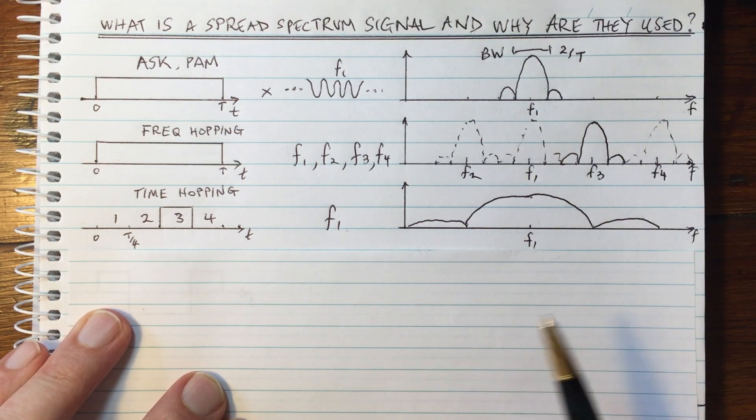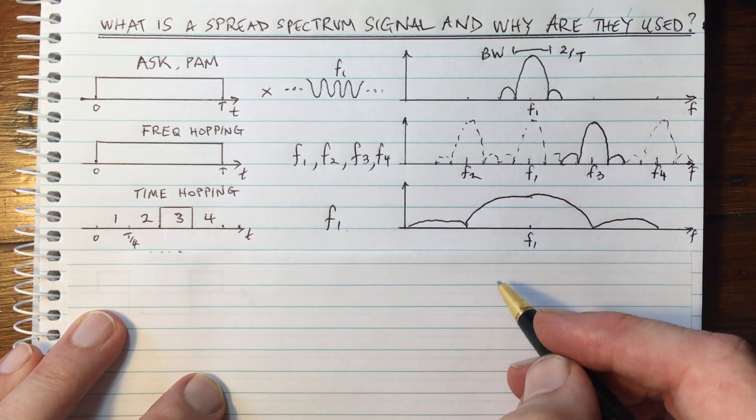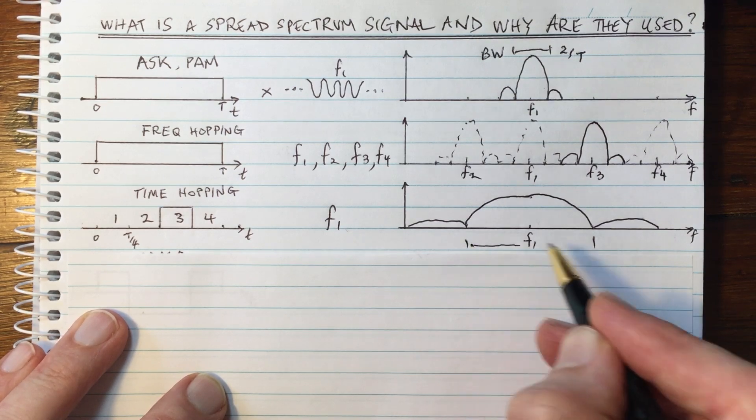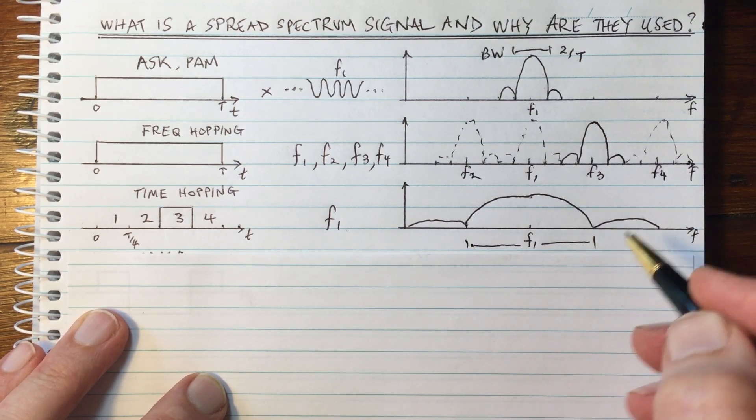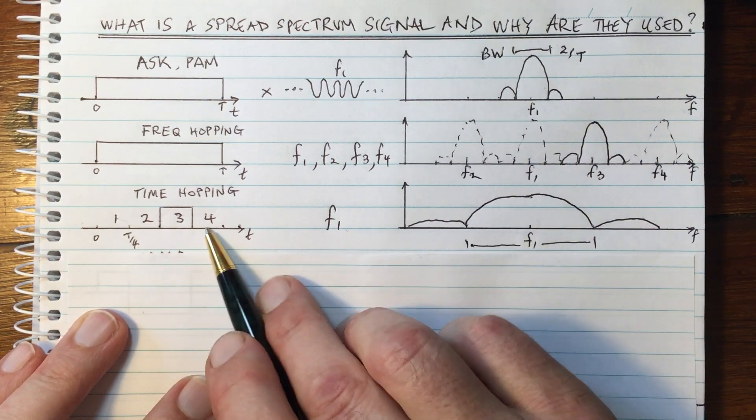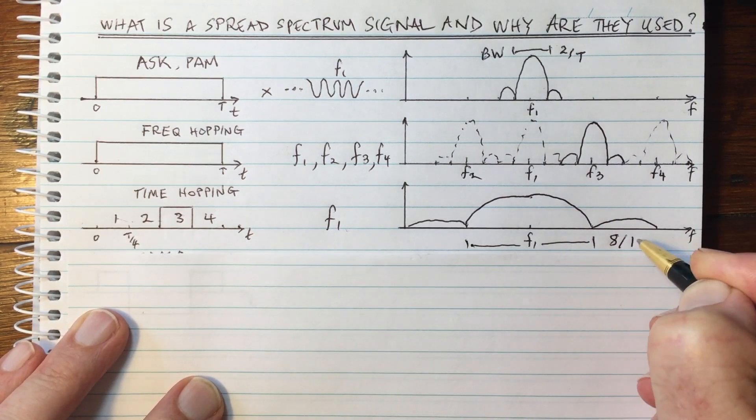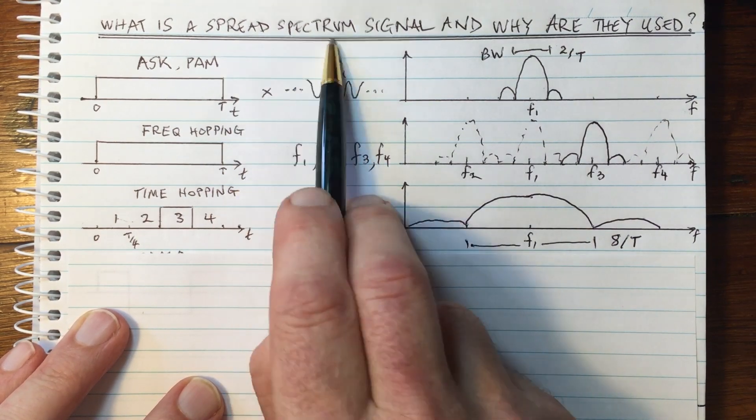So there are two different ways of doing it, both of which are spreading out the spectrum. In this case here, the bandwidth between these two points here, the two zeros here, is multiplied by a factor of four because we've got four slots. So this is now 8 divided by T. That's the spread spectrum.